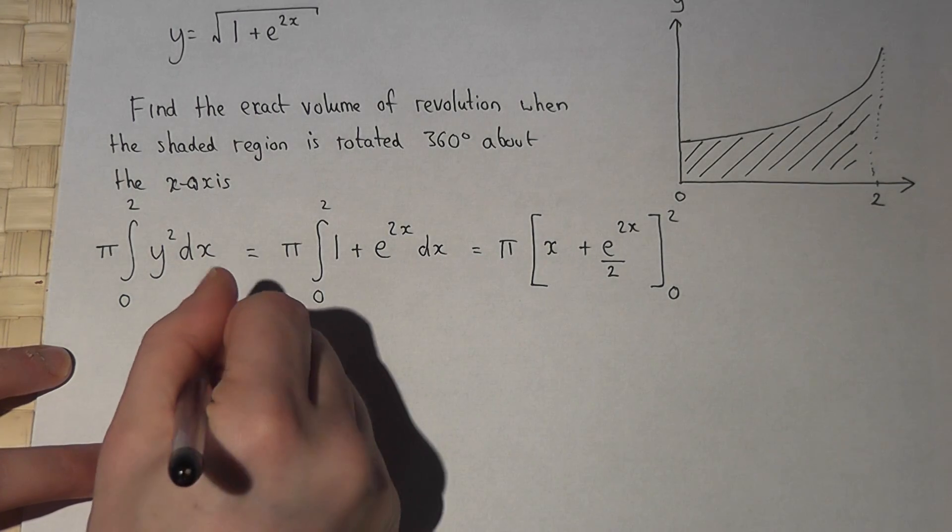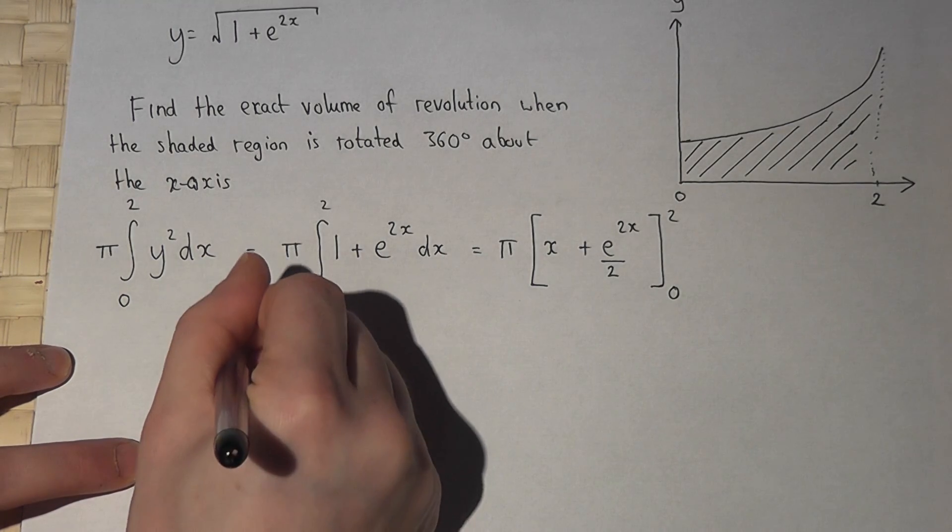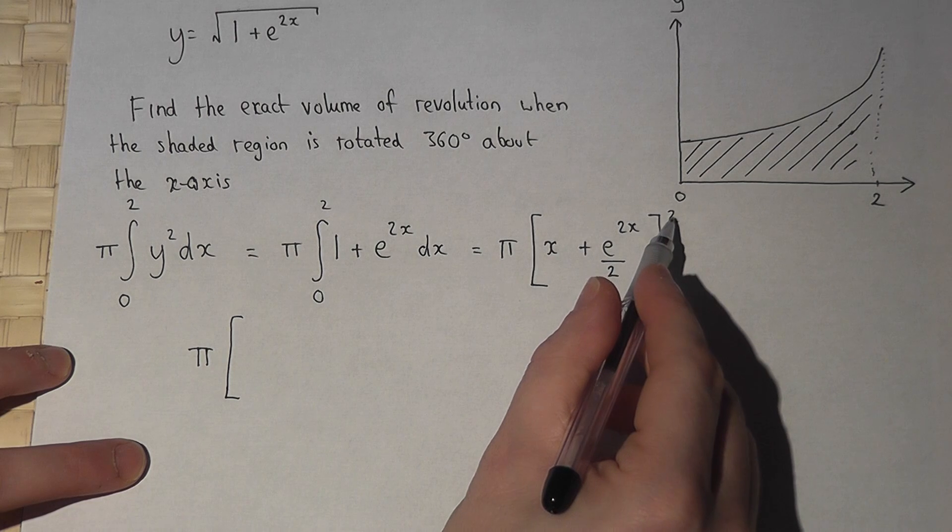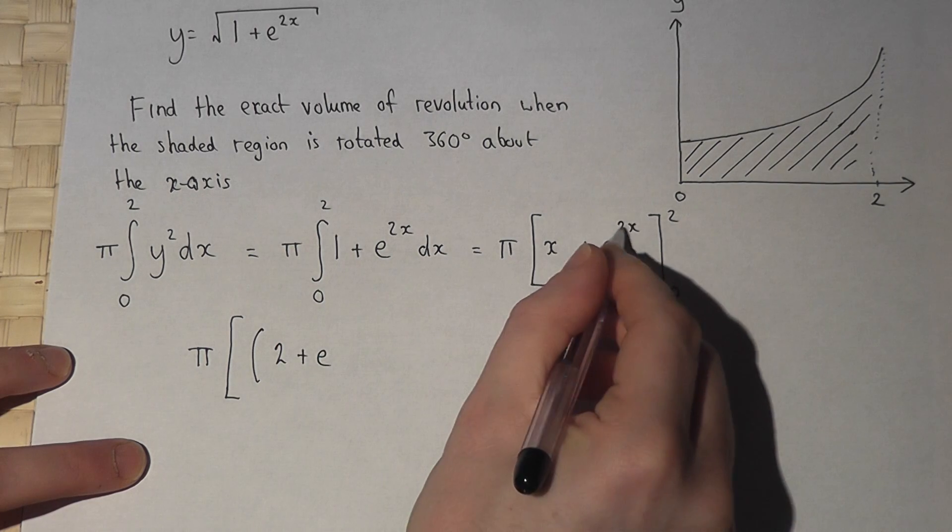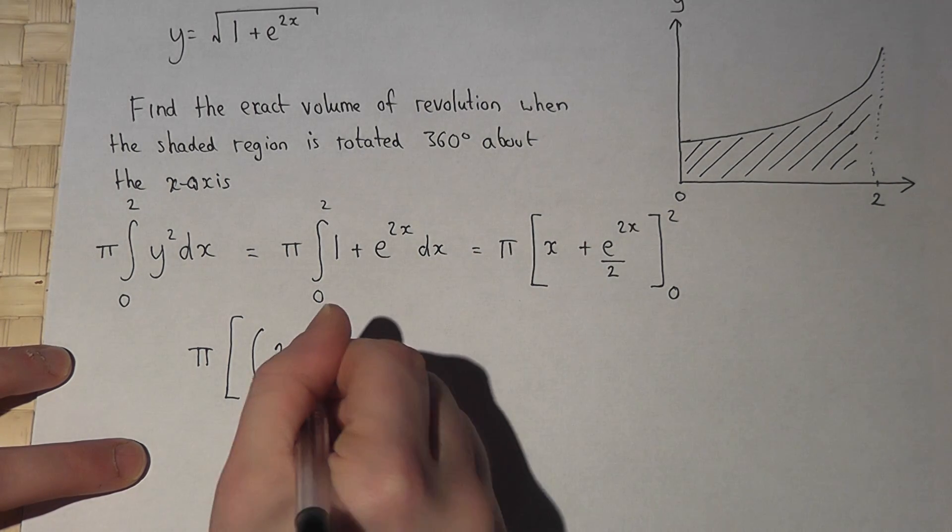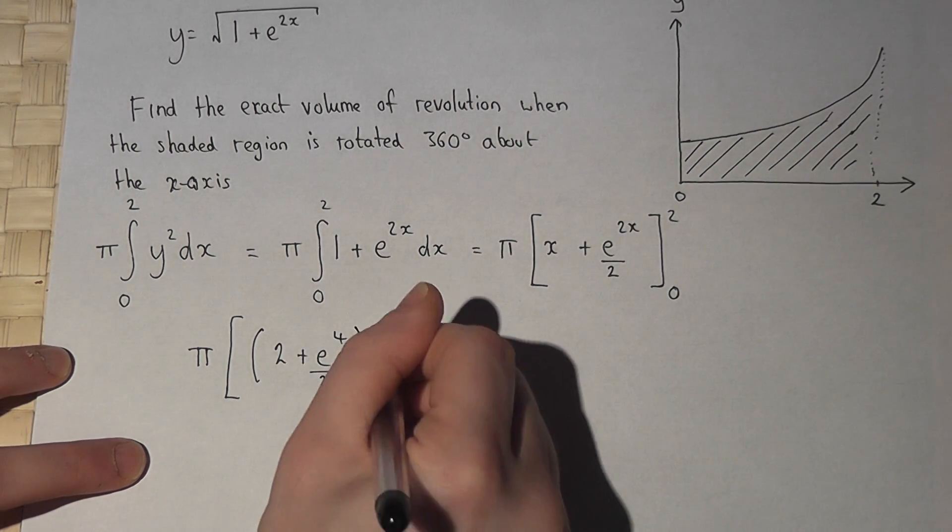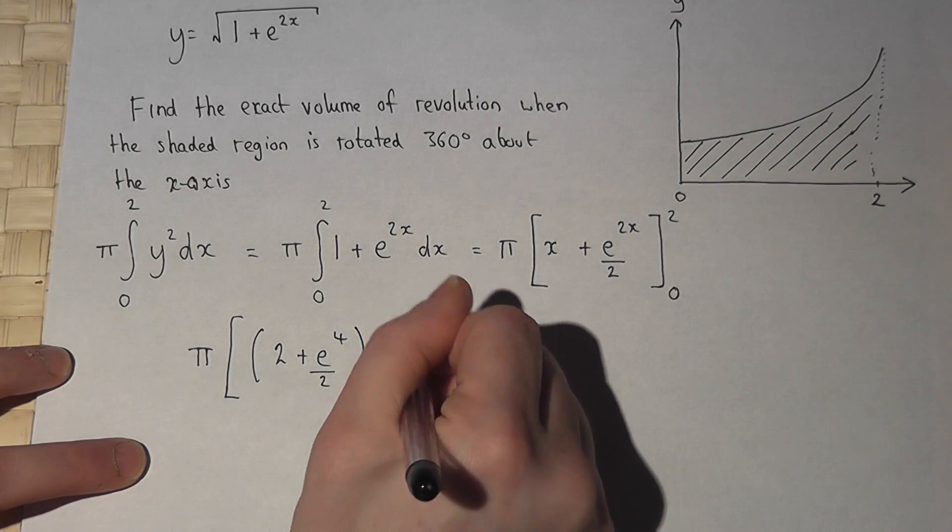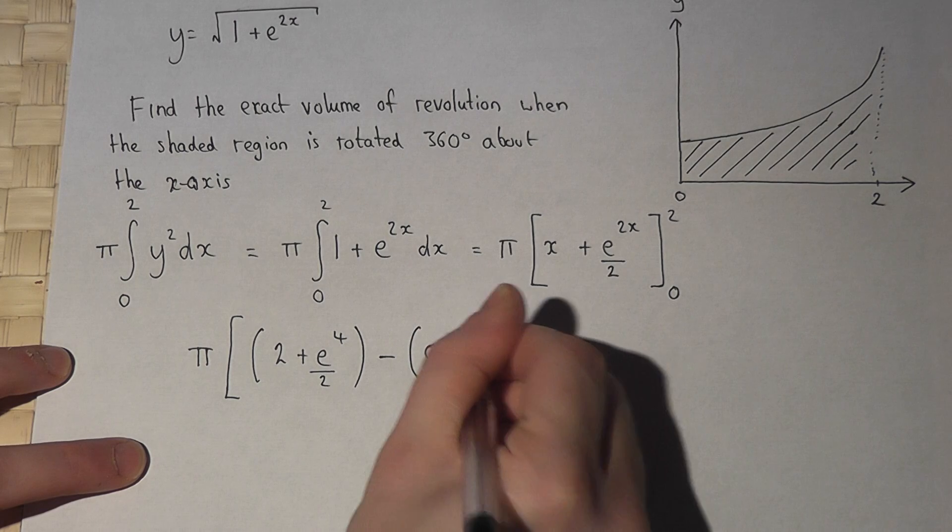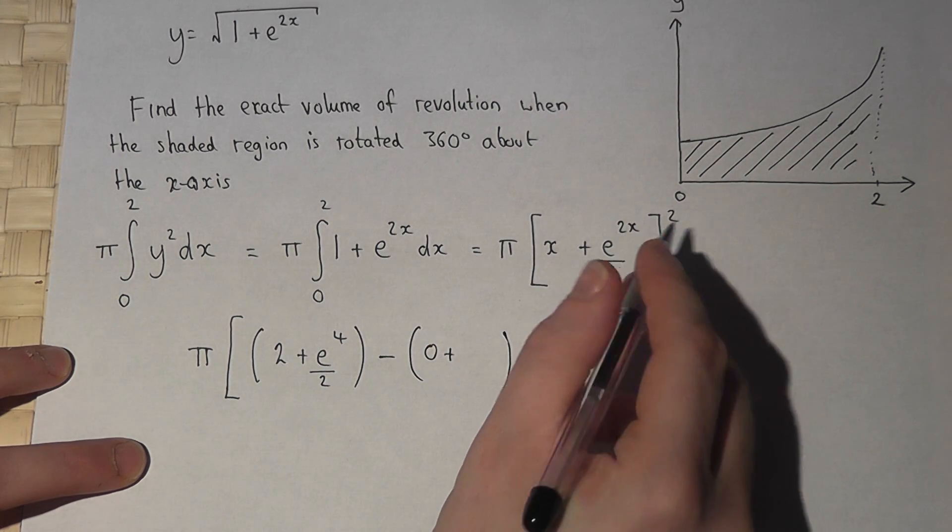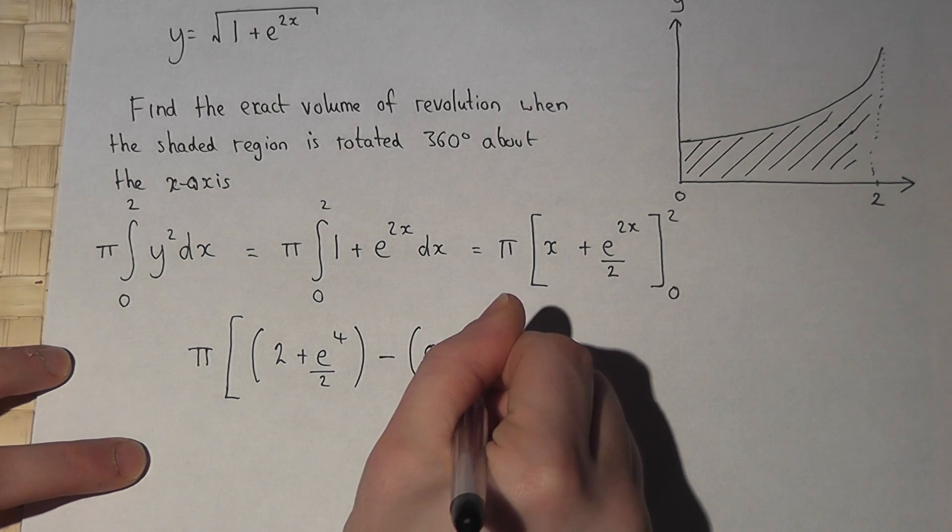Then we let x equal 2, so we get 2 plus e to the 2 times 2 is 4, all over 2, and take away the same expression when x equals 0, so 0 plus e to the power of 0 is 1, all over 2.